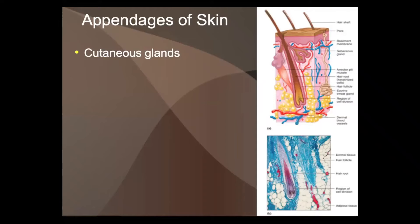These are parts that come off the skin. Cutaneous glands would be things like oil glands and sweat glands.